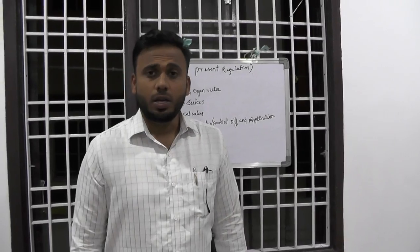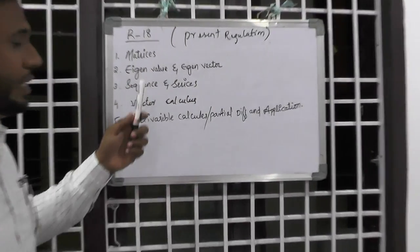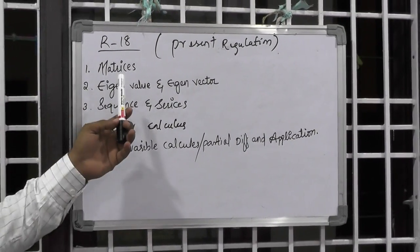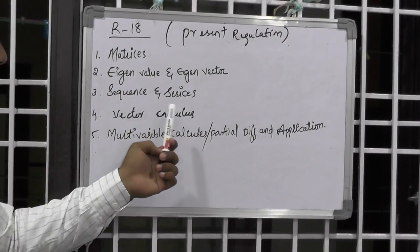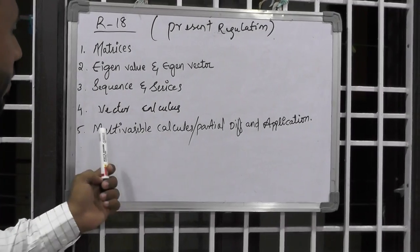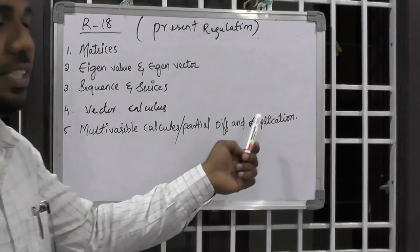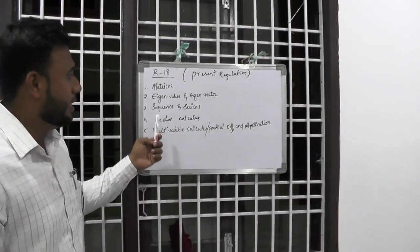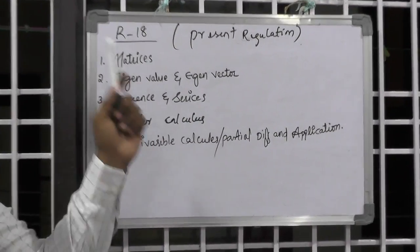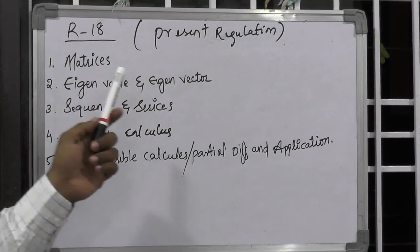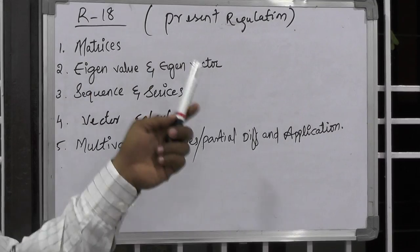Now coming to the present regulation, that is R18 regulation. It consists of five units: matrices, eigenvalue and eigenvector, sequence and series, vector calculus, and multivariable calculus or partial differential equations and their applications. You can notice that sequence and series and vector calculus are brought back from the R09 regulation. Matrices is again divided into two parts — matrices one and matrices two.